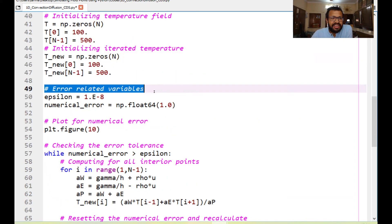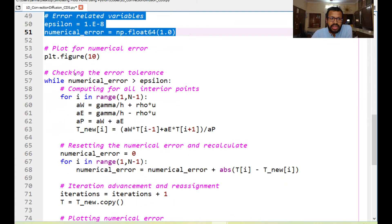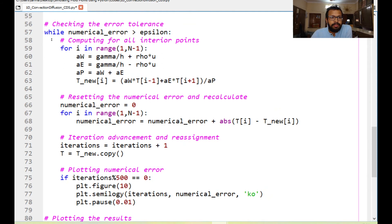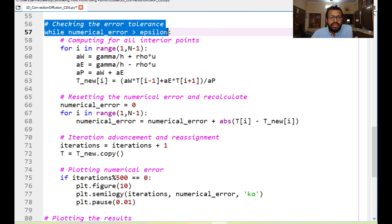Thereafter we define the error related variables just like we had been doing before so we want the epsilon to go of the order of 10 to the power of minus 8 and we initialize the numerical error to be 1.0. So here I open a new figure that I'm numbering as 10. Figure 10 we would be using to plot the numerical error. Now the important part begins that first we check whether the numerical error is greater than epsilon and if it's not then it's fine but it usually would be until we would be running the calculations.